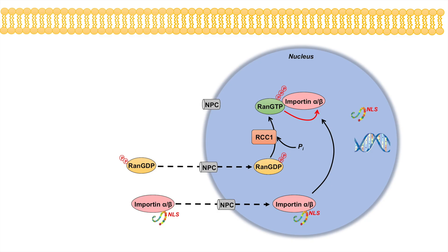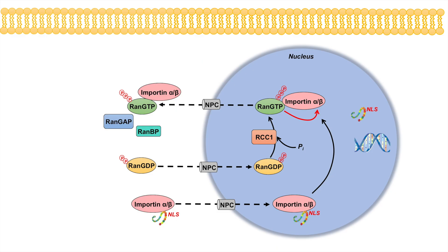Now we have a dimer of RAN-GTP and importin bound together. RAN-GTP can then exit with importin out of the nucleus through a nuclear pore complex and back into the cytosol. Once RAN-GTP and importin are in the cytosol, RAN-GTP gets acted on by RAN-GAP (RAN-GTPase activating protein) and RAN-binding proteins. These two types of proteins increase the GTPase activity of RAN, removing one phosphate group from RAN-GTP to reform RAN-GDP. This hydrolysis disrupts RAN-GDP's ability to bind to importin, effectively kicking importin off.